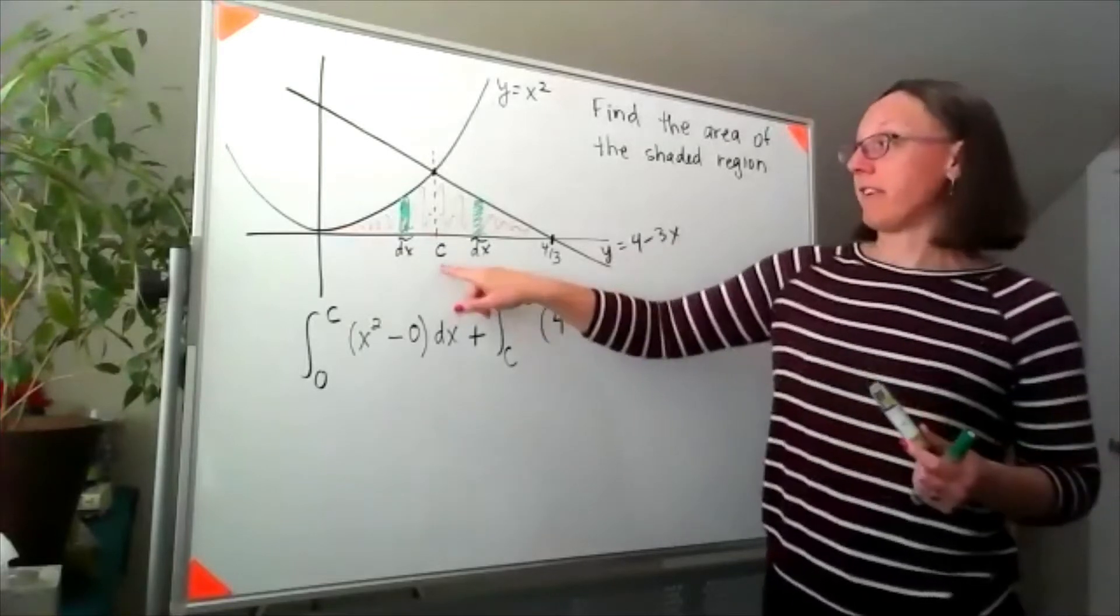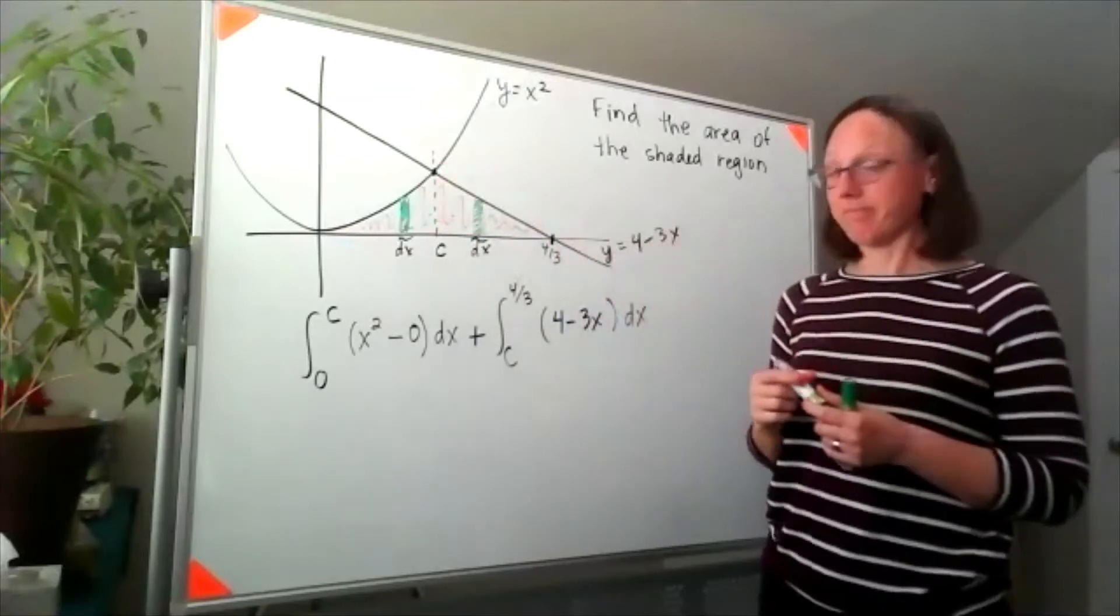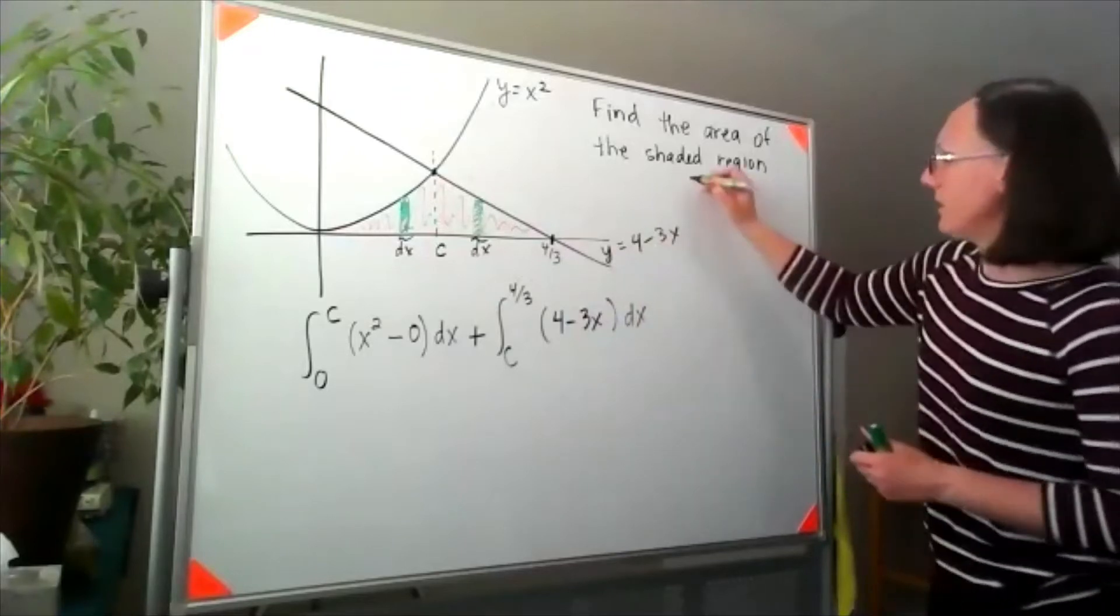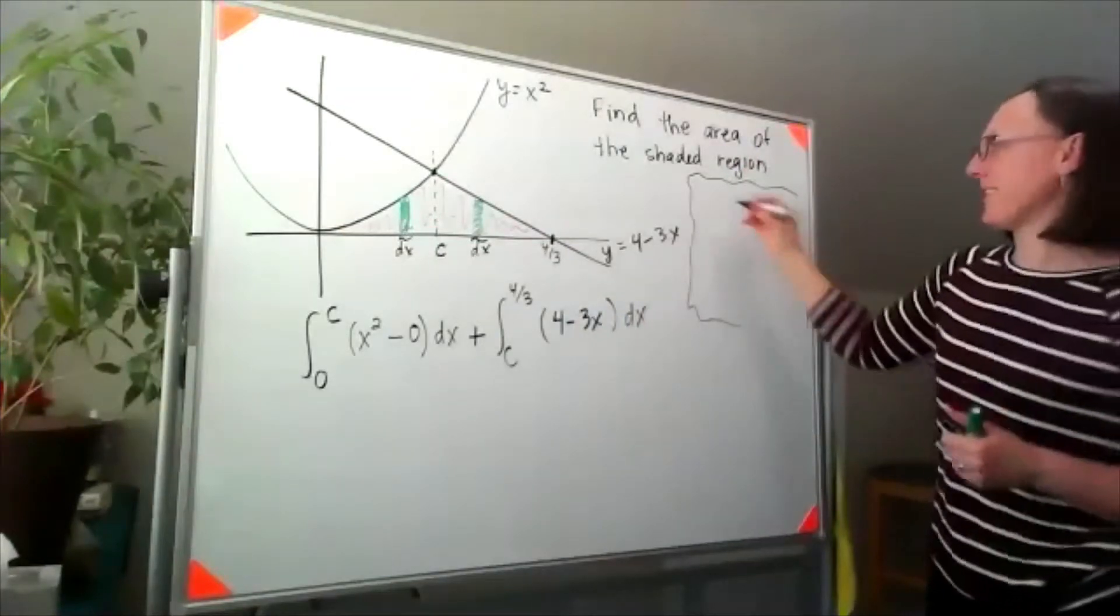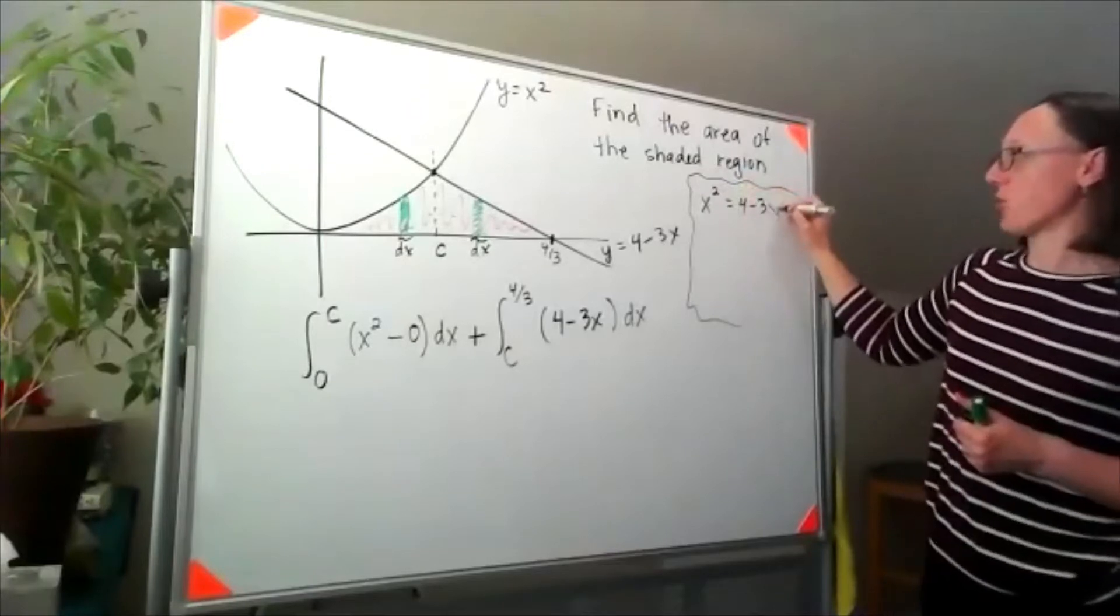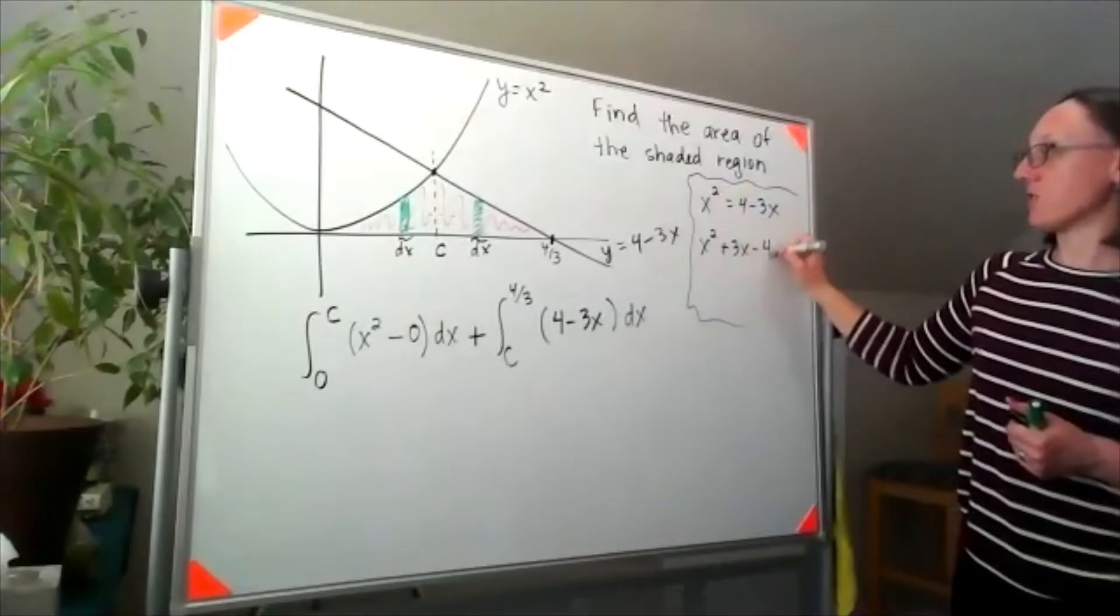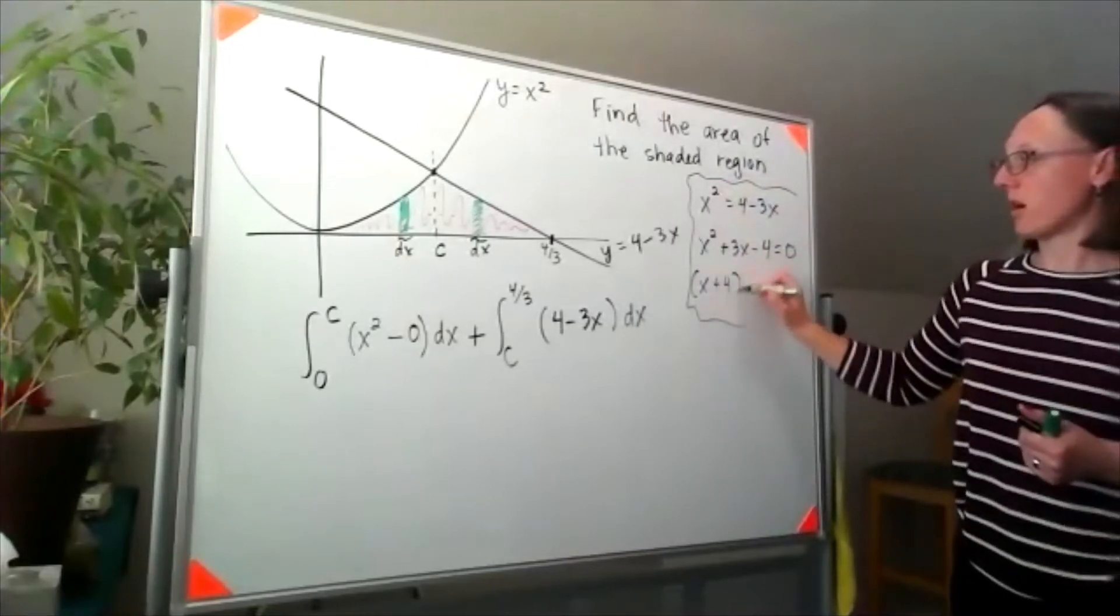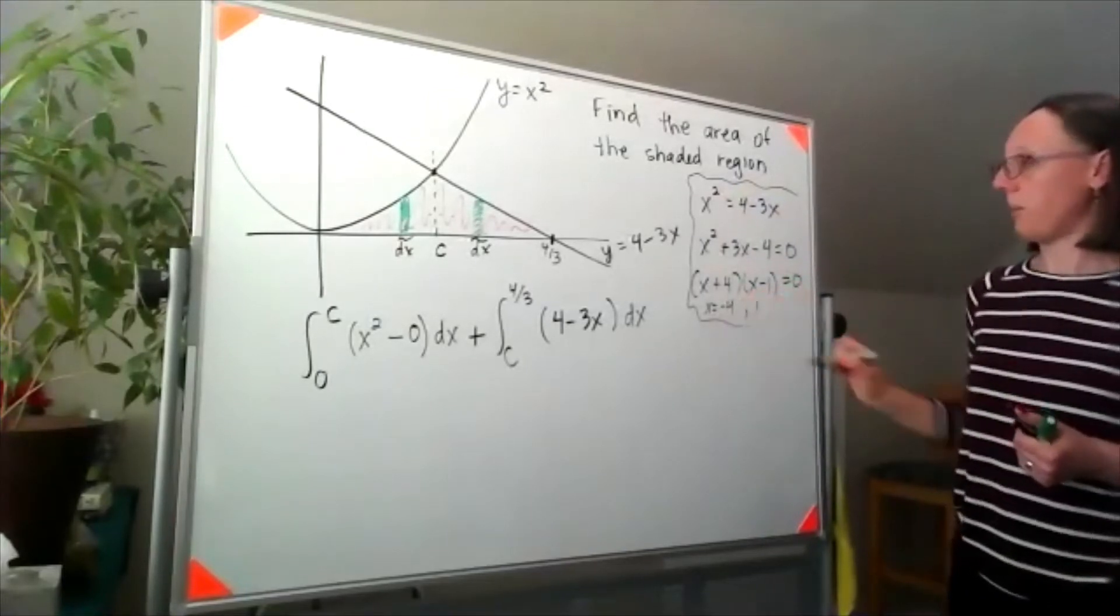Now I've got to figure out what that c value is and that's the place where these two curves are intersecting. I think I've written myself nice functions, but sometimes I mess up. Let's try to find that intersection point. I'd have x squared is equal to four minus three x, which means x squared plus three x minus four is equal to zero. And I'm going to get x plus four times x minus one or negative four positive one.